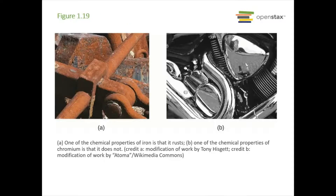Some examples: iron rusting — iron is changing into iron oxide. Chromium, on the other hand, does not rust. These are chemical properties of iron and chromium. Iron can react and form a new compound with oxygen; chromium does not.